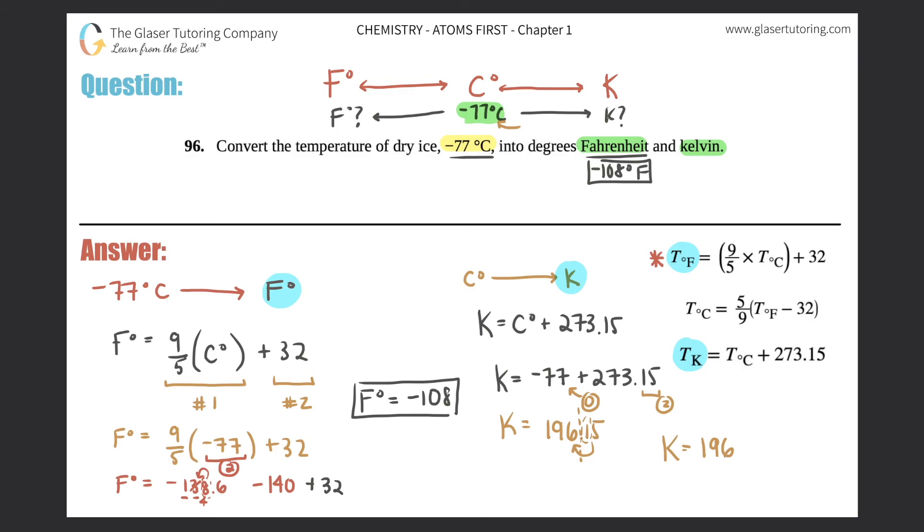And those are your two temperatures: negative 108 degrees Fahrenheit and 196 degrees Kelvin. And that's it, easy peasy guys. Can't get any easier than that, right? You just got to memorize these equations, especially if your teacher or professor doesn't give them to you.